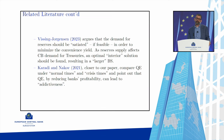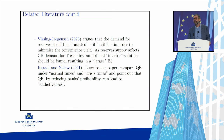A closely related paper by Vissing-Jorgensen argues that in deciding the size of the balance sheet, the central bank should consider the convenience yield demanded on reserves and treasuries, aiming to reduce those convenience yields. She finds there is a trade-off between the two, and that on net a rather large balance sheet should be desired.